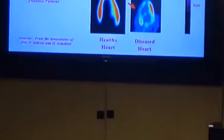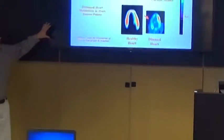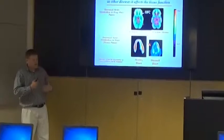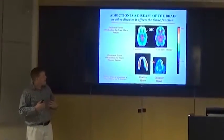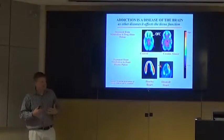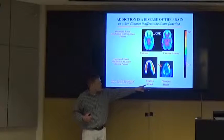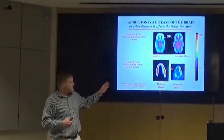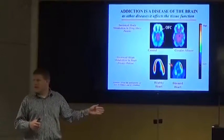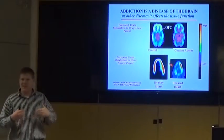Let's compare it to another disease. On the bottom here, you've got a metabolism rate, so all the activity that's going on in a heart, of a patient with a heart disease. On the left, you have a healthy heart, and on the right, you have a diseased heart.